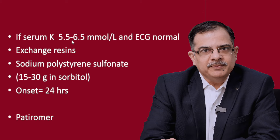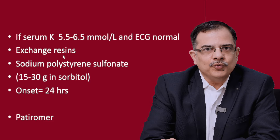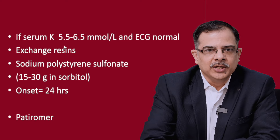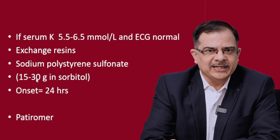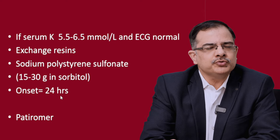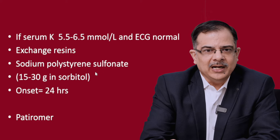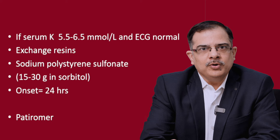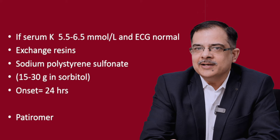If the potassium value is between 5.5 to 6.5 and ECG is totally normal, we can go for exchange resins, also known as potassium binders. They bind potassium inside the intestine. Sodium polystyrene sulfate is given to the patient — the dose is 30 to 50 grams dissolved in sorbitol. Onset of action is 24 hours. The main side effect of this agent is intestinal necrosis. This is the overall treatment of high serum potassium, and equally important is to treat the underlying disorder.